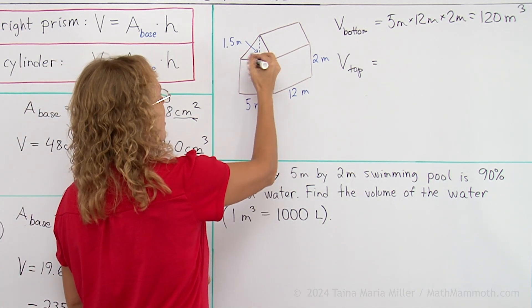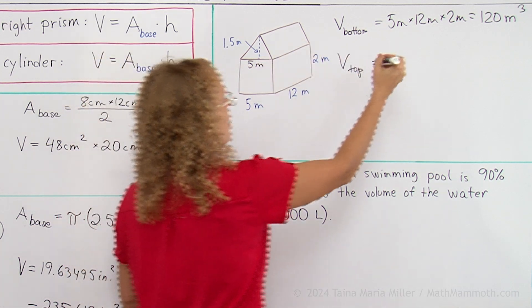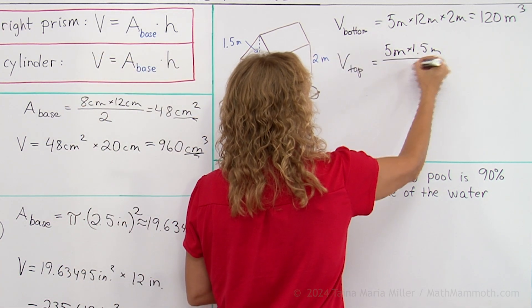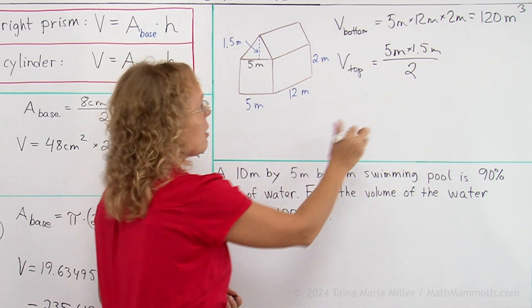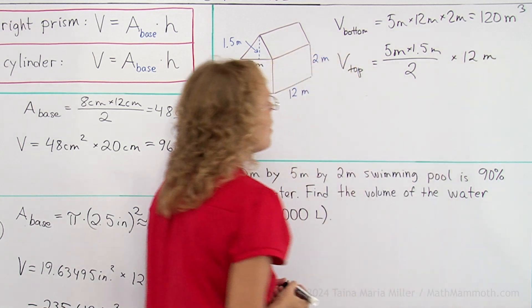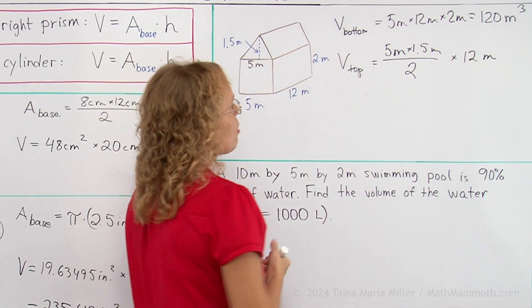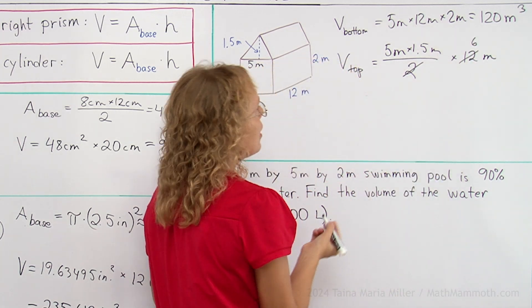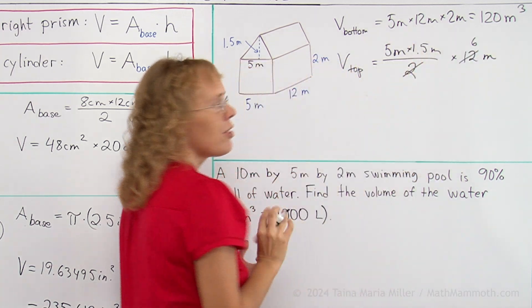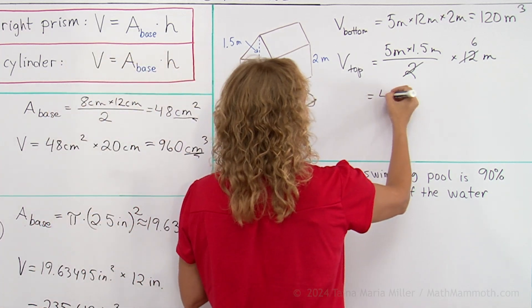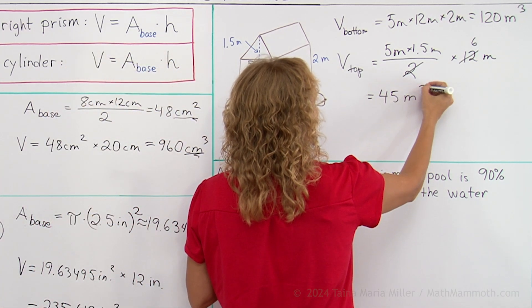This is the base of the triangle, right? 5 meters. So I get 5 meters times 1.5 meters divided by 2, that's the area of the triangle, and then this whole thing times 12 meters. Okay, you could simplify, for example, the 2 and 12 gives you 6. Then you have 6 times 5, 30, and 30 times 1 and a half. So we will get 45 cubic meters.